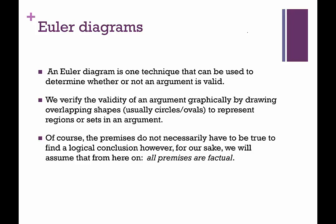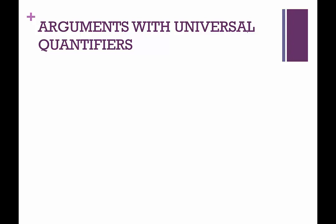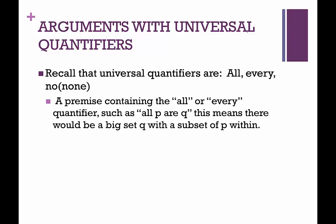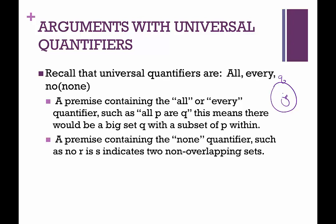Okay, so in the premises, we're going to be given sets of things and we are going to represent those using circles or ovals. To start, let's look at arguments with universal quantifiers. So recall that the universal quantifiers, that's all or every, or on the other side of the spectrum, no or none. A premise containing the all or every quantifier, such as all P are Q, means that there would be a big set Q with a subset P inside, right? So if all P are Q, here's my set Q, all P are within set Q, so we would look something like that. So P would be a subset of Q. A premise containing the no or none quantifier, such as no R is S, indicates two non-overlapping sets. So we would have our R set over here and our S set over here, right? We don't need any overlap for them because it says that none of them are the other one.